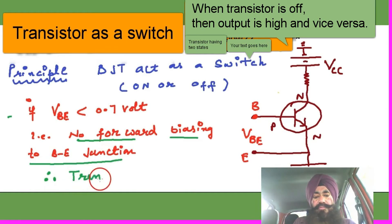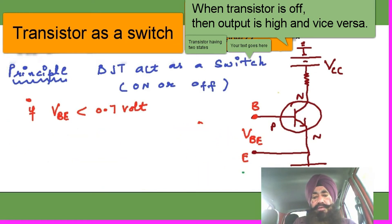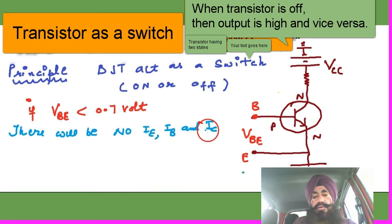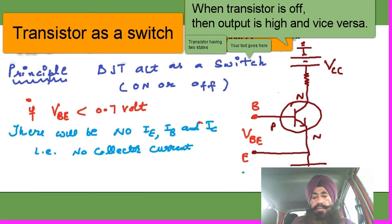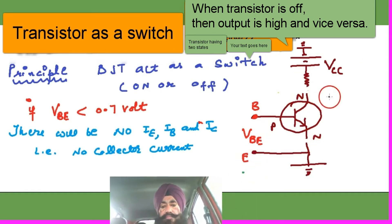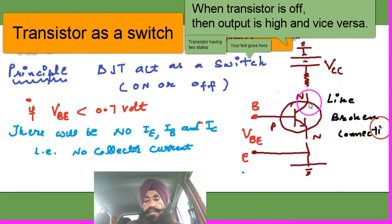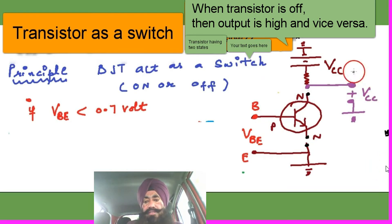If it is off without forward biasing, there will be no current — no emitter current, base current, or collector current. That means this point is broken, and as the point is broken, the output is taken at this point. Here the voltage will appear as VCC, a high voltage. So when the transistor is off, the voltage appears as a high voltage VCC.